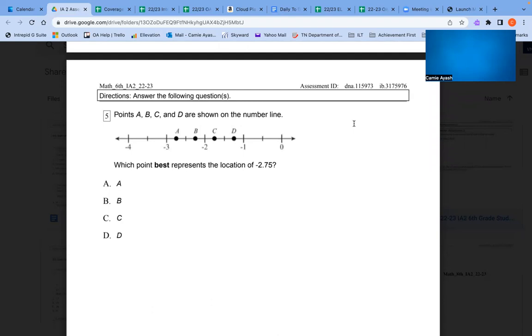Points A, B, C, and D are shown on the number line. Which point best represents the location of negative 2.75? A, B, C, or D?